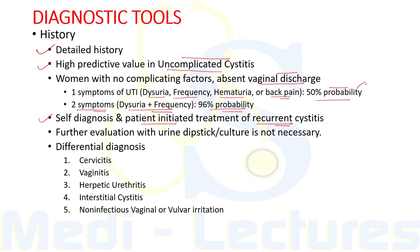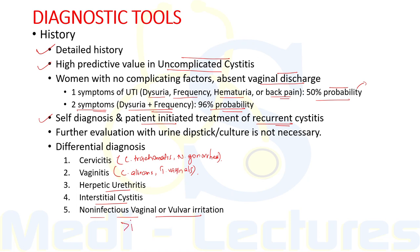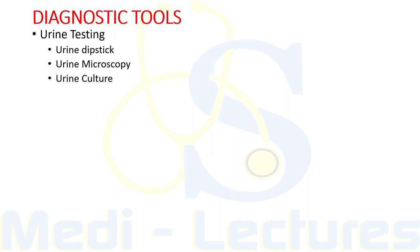Further evaluation with urine dipstick or culture is not necessary in such patients before initiating definitive therapy, unless there is concern for a resistant pathogen. The differential diagnoses of UTI to be ruled out include cervicitis (caused by Chlamydia trachomatis or Neisseria gonorrhoeae), vaginitis (caused by Candida albicans or Trichomonas vaginalis), herpetic urethritis, interstitial cystitis, and non-infectious vaginal or vulvar irritation. Women with multiple sexual partners and inconsistent condom use are at high risk for both UTI and STDs, so symptoms alone do not always distinguish between the two.